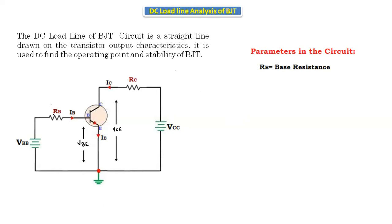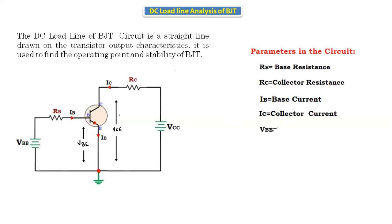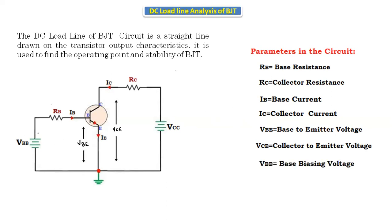Now let's see the parameters in the circuit. RB is the base resistance — the resistor connected to the base. RC is the collector resistance. IB is the current passing through the base and IC is the current passing through the collector. VBE is the voltage between base and emitter, and VCE is the voltage between collector and emitter. VBB is the biasing voltage and VCC is the collector biasing voltage. Biasing means giving external supply to any electronic device.